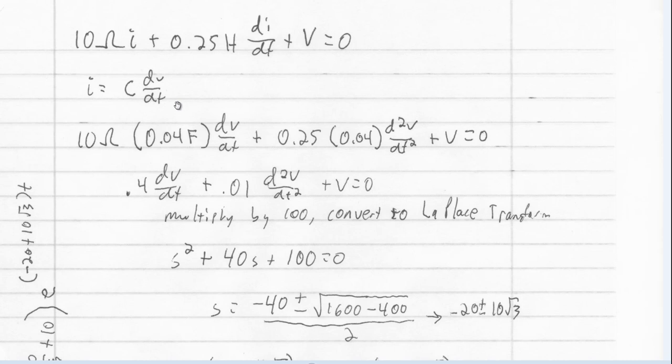And so if I want to solve for V, why don't I go ahead and convert my I here into V just by subbing in C dV dt, and then my dI dt is just going to be the derivative of this. And so I have 10 ohms times C dV dt, plus 0.25 henrys times C second order derivative of V with respect to T, plus V equals zero. So now I've got my differential equation just in terms of V.